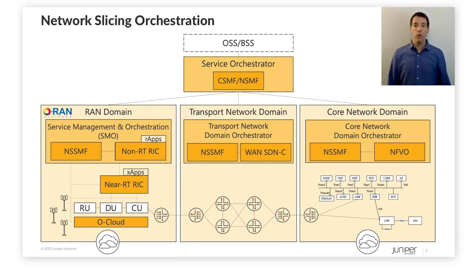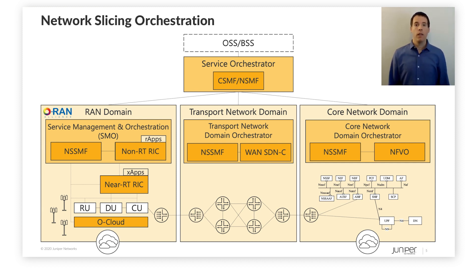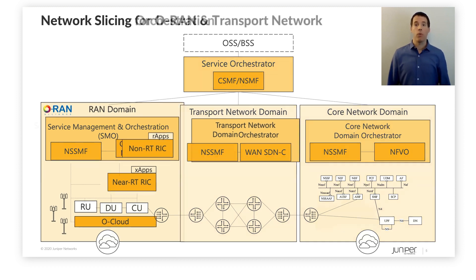For example, in the radio access network domain, O-RAN specifies the system architecture and functional blocks, including the RAN intelligent controller, or RIC. In the transport network, the network slicing subnet management function NSSMF interfaces with the WAN SDN controller to set up inter-cloud connectivity. Let's have a closer look at network slicing in the RAN and transport network.